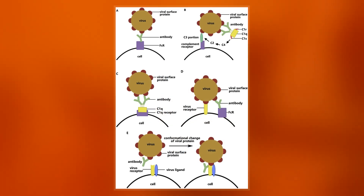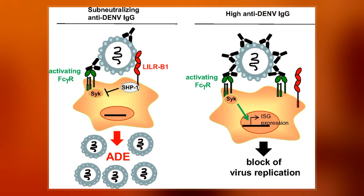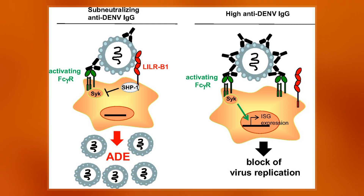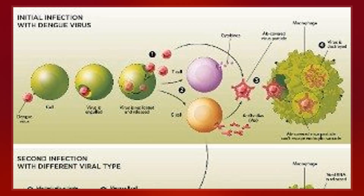Antiviral antibodies promote viral infection of target immune cells by exploiting the phagocytic FC³R or complement pathway. After interaction with the virus, the antibody binds FC receptors expressed on certain immune cells or some of the complement proteins. FC³R binds antibody via its fragment-crystallizable region.